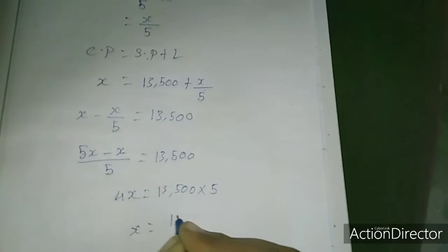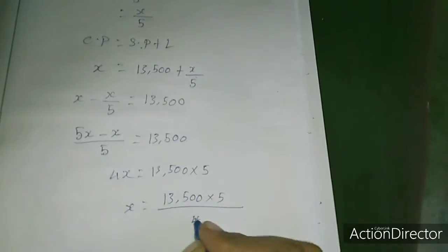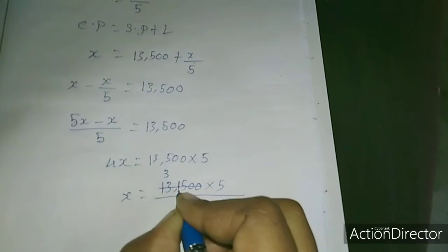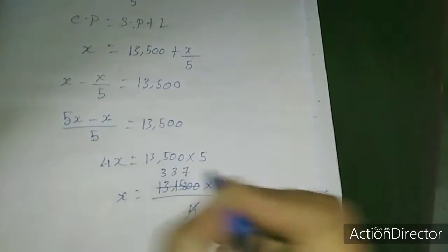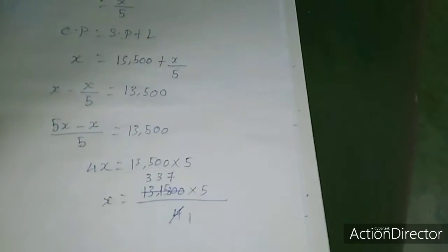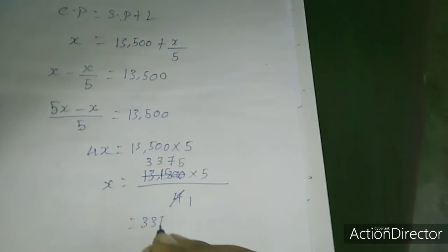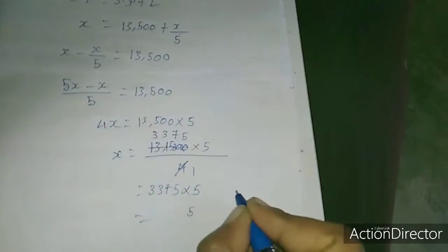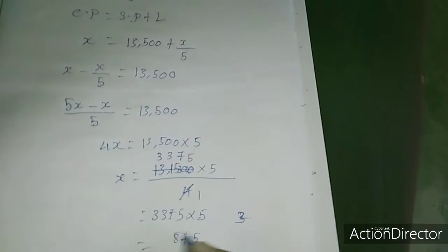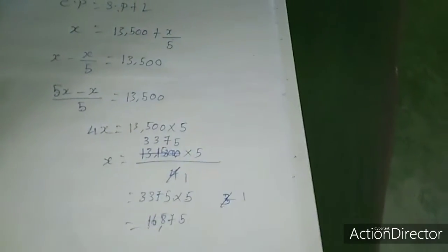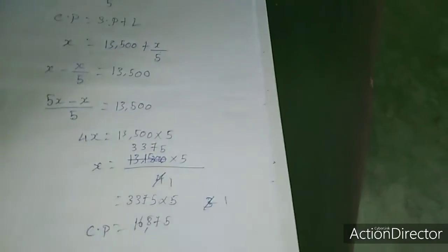Solving: x equals 13,500 into 5 divided by 4. That is 67,500 divided by 4 equals 16,875. So the cost price is 16,875. This is the answer for the 6th sum.